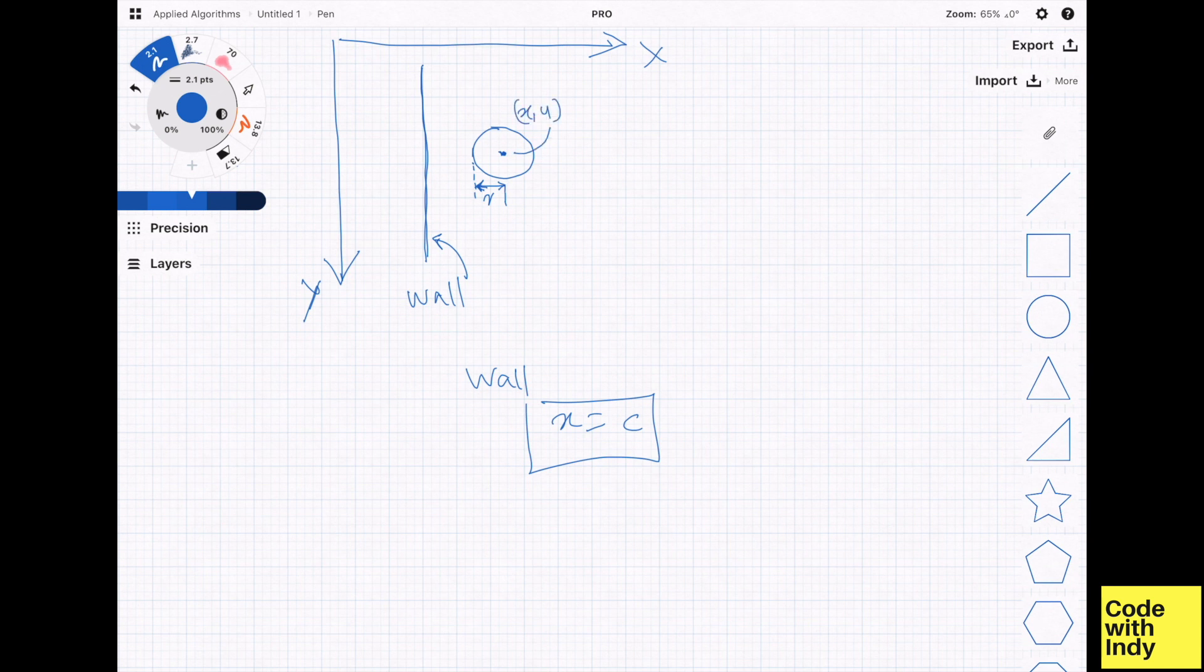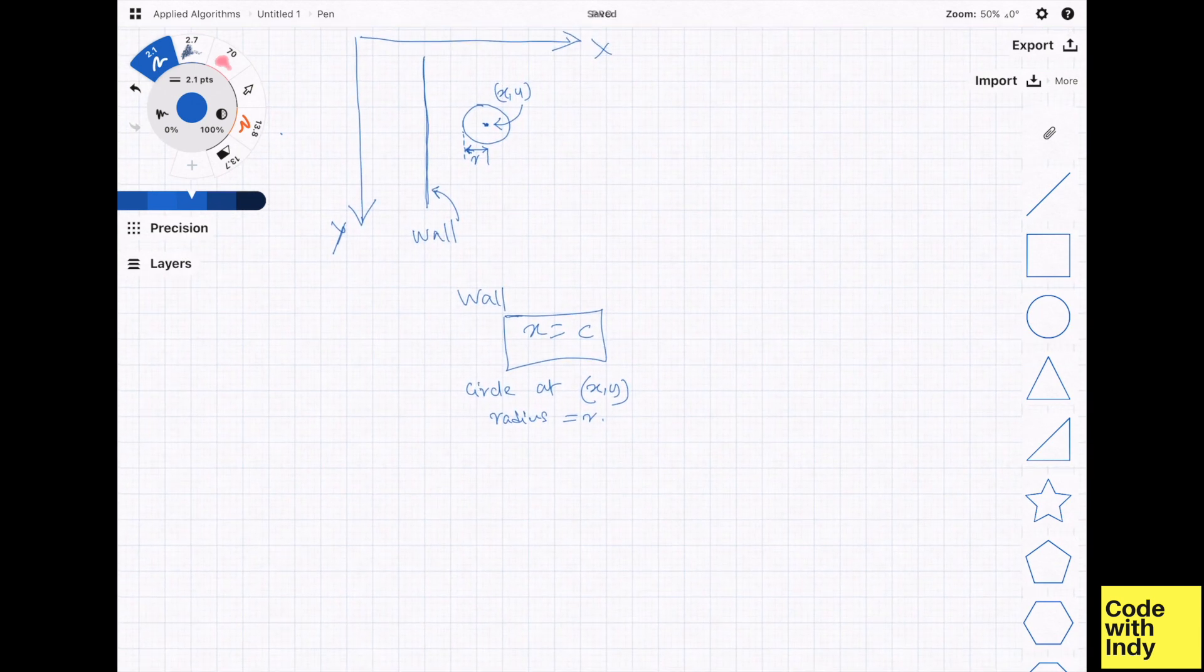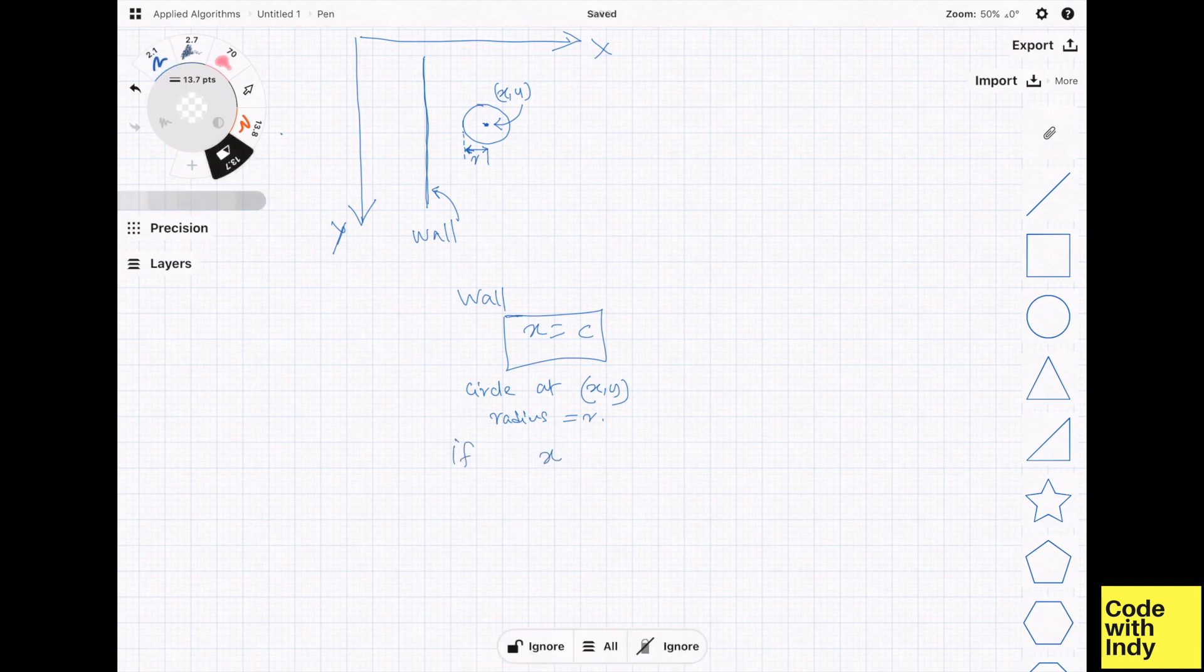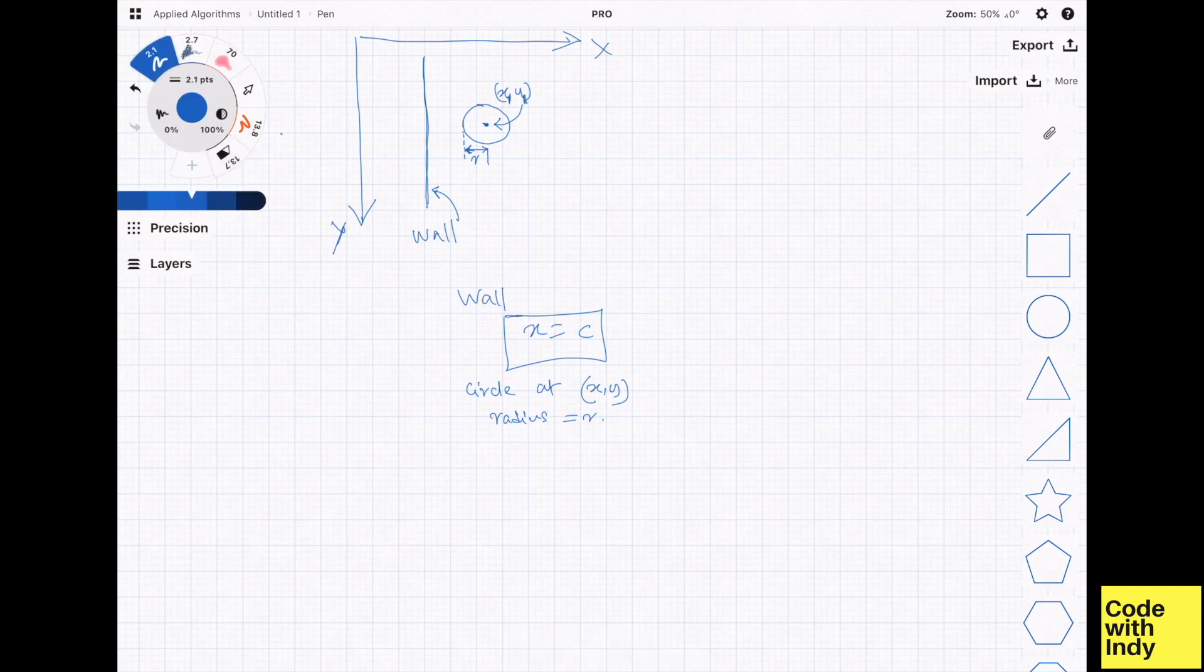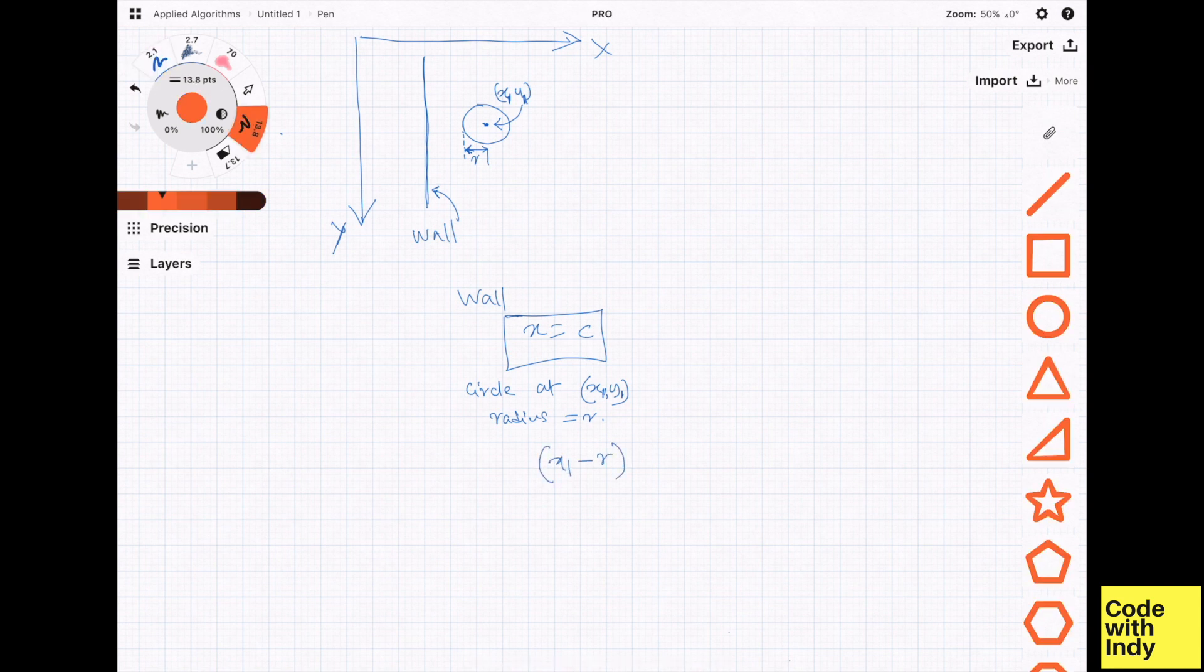First, let's look at the vertical walls and then derive for the horizontal walls. A vertical wall means a vertical line at x equals c1. Let's consider the case where the circle is moving from right to left and the center of the circle is x1, y1 with a radius of r. As you can imagine, the circle touches the wall when x1 minus r equals c1.